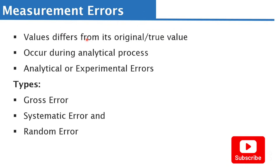Measurement error has to do with values that are outside the true value or original value of what you are measuring. This can occur during the analytical process — also known as analytical or experimental error. If you carry out analysis and the result is outside the original or true value of that sample, that is called a measurement error.